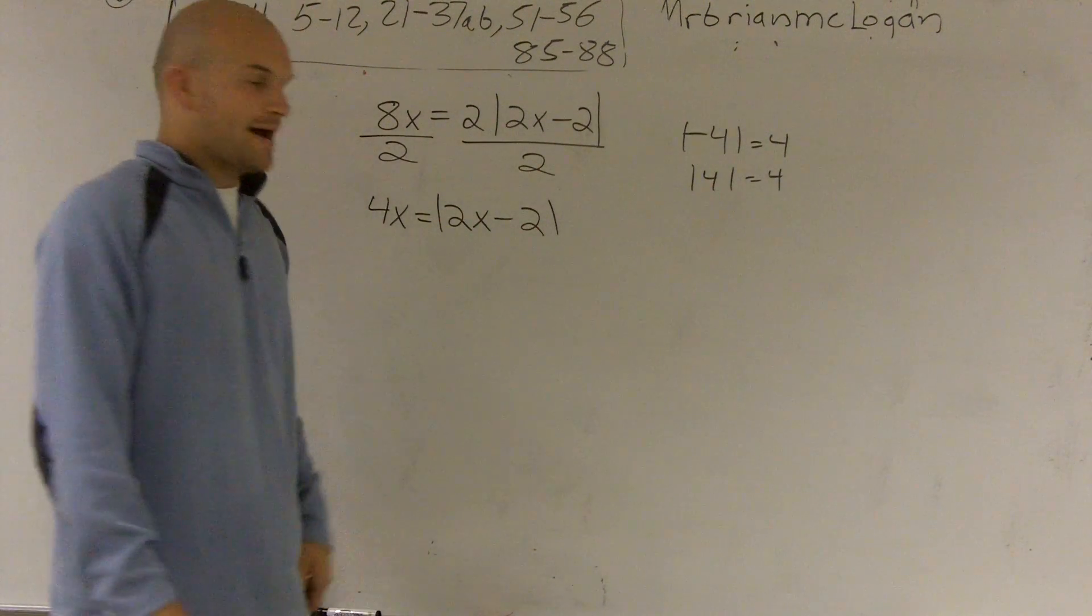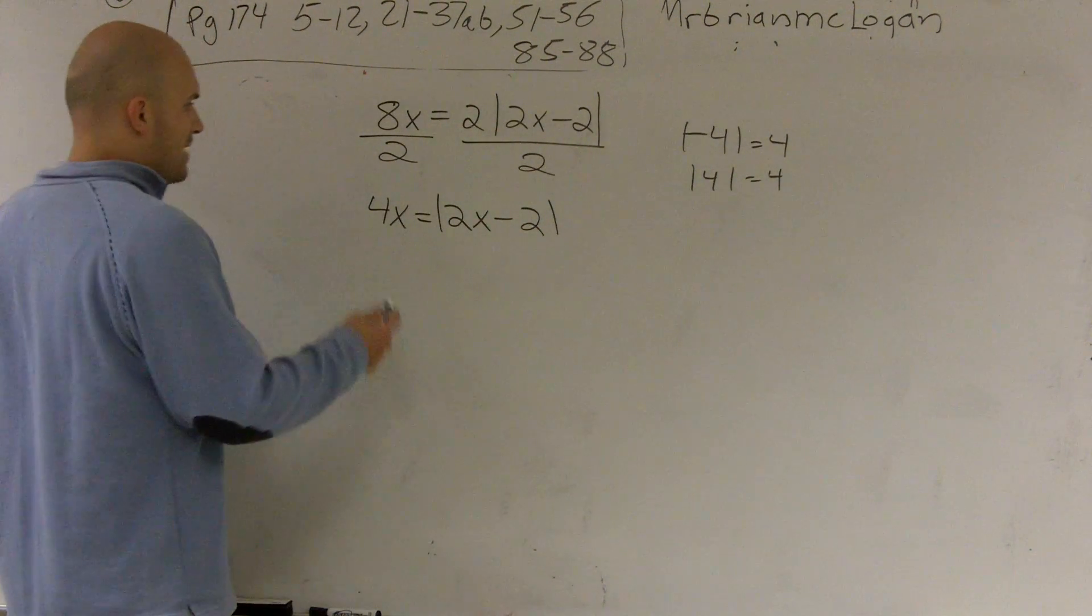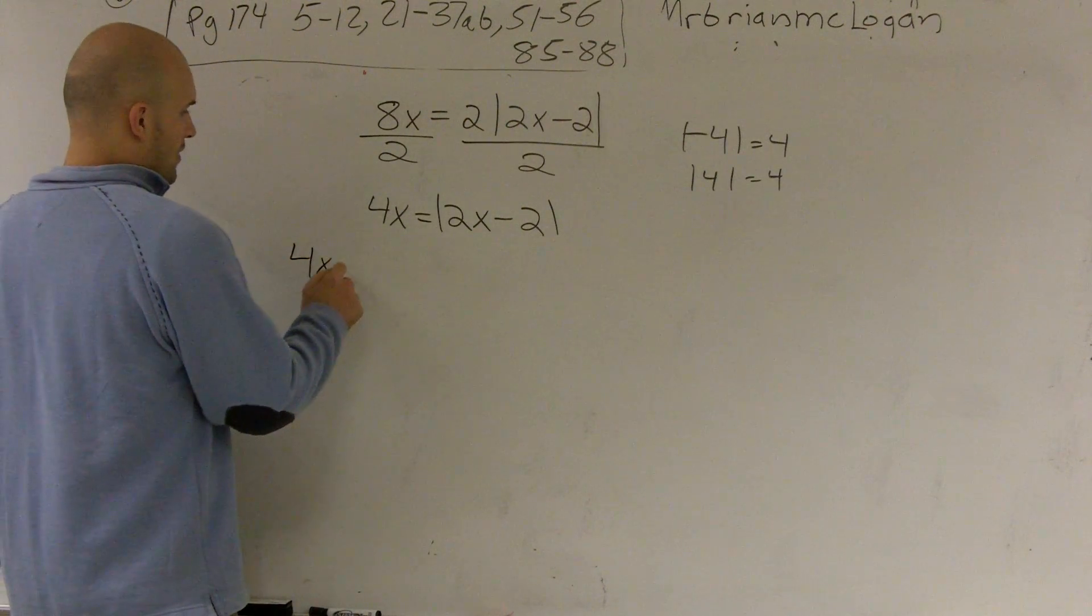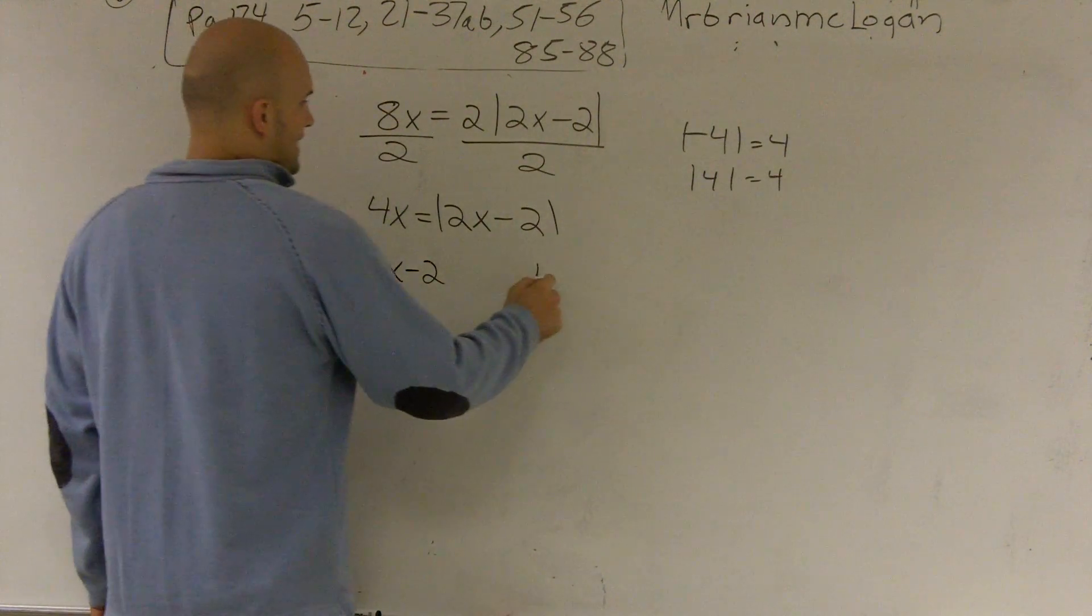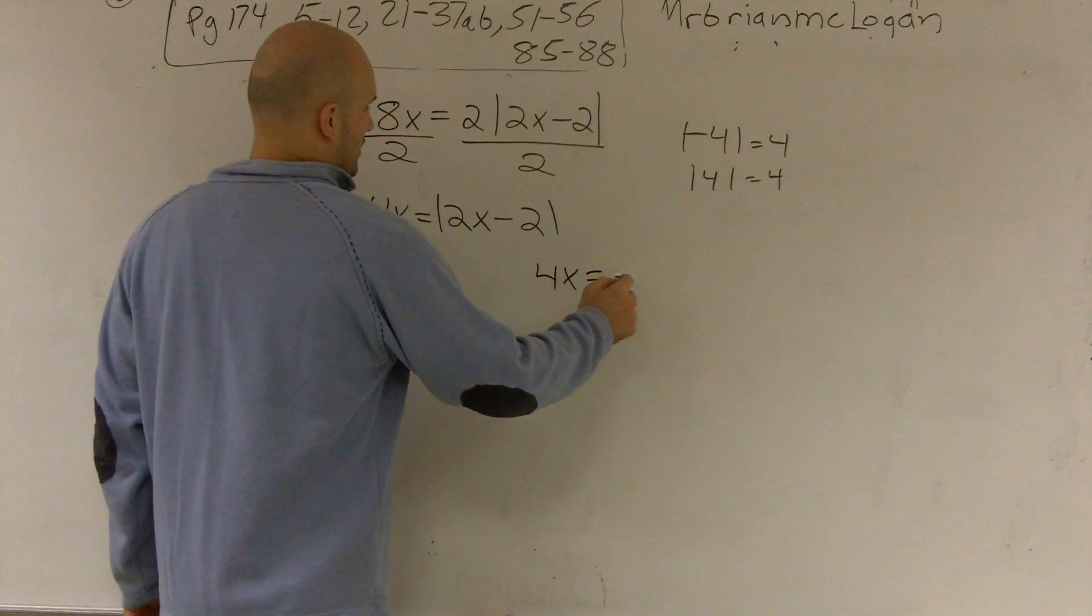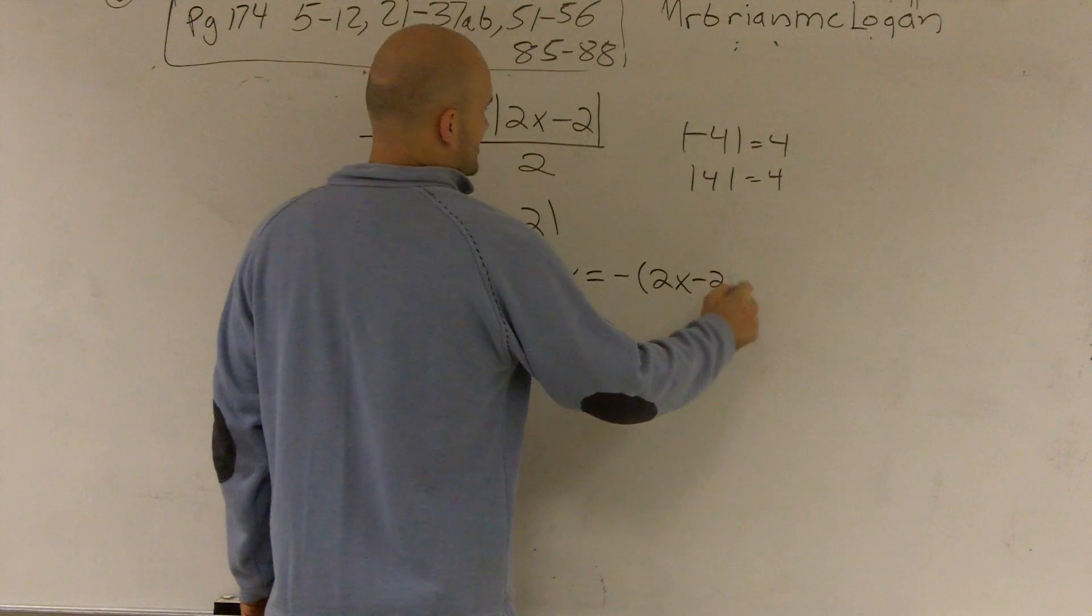So what I'm going to do here is I'm going to take the negative and the positive. So I'll say 4x is equal to positive 2x minus 2, and 4x is also going to equal negative 2x minus 2.